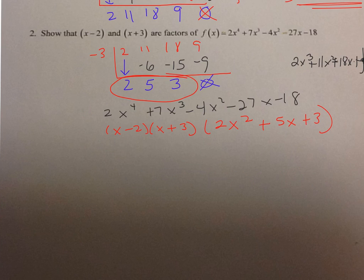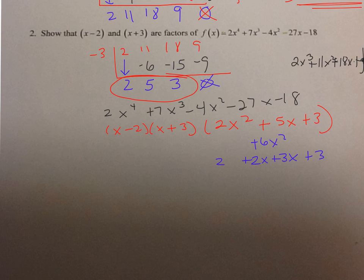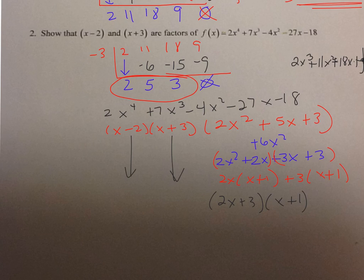I multiply the first times the last and get 6x squared. What multiplies to 6 and adds to 5 would be 2x and 3x, both positive. Bringing down terms and factoring by grouping: GCF of the first group is 2x times x plus 1, and the GCF of the second group is positive 3 times x plus 1. So my factors are 2x plus 3 and x plus 1. And don't forget the earlier factors: x minus 2, x plus 3, 2x plus 3, and x plus 1 — these are all factors of the original polynomial.